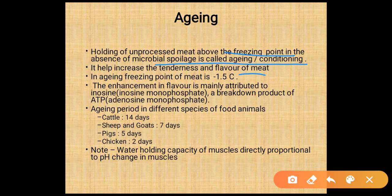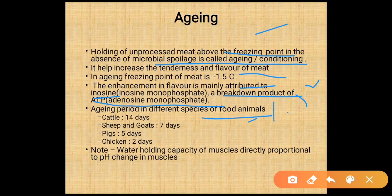Aging helps increase the tenderness and flavor of meat. The aging freezing point is minus 1.5 degrees Celsius. Enhancement in flavor is mainly attributed to inosine monophosphate (IMP), a breakdown product of ATP (adenosine triphosphate). Aging periods: cattle — 14 days, sheep and goat — 7 days, pigs — 5 days, chicken — 2 days. Water holding capacity of muscle is directly proportional to pH changes in the muscle.